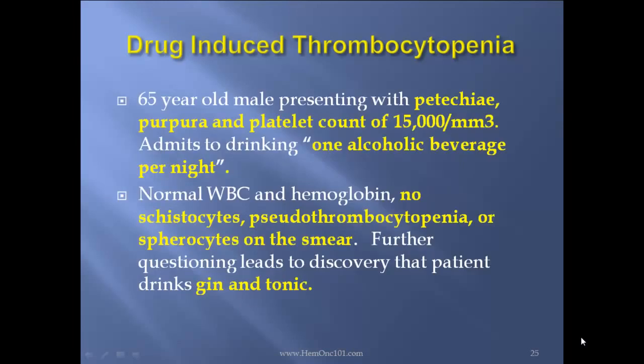Drug-induced thrombocytopenia case report. A 65-year-old male presenting with petechiae, purpura, and platelet count of 15,000, admits to drinking one alcoholic beverage per night. Normal WBC and hemoglobin, no schistocytes, no pseudothrombocytopenia, or spherocytes on smear. Further questioning leads to the discovery that the patient drinks gin and tonic.